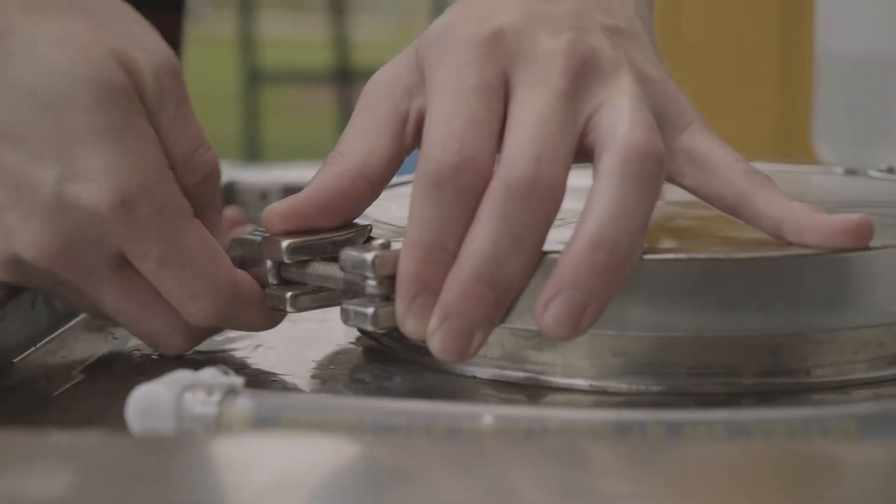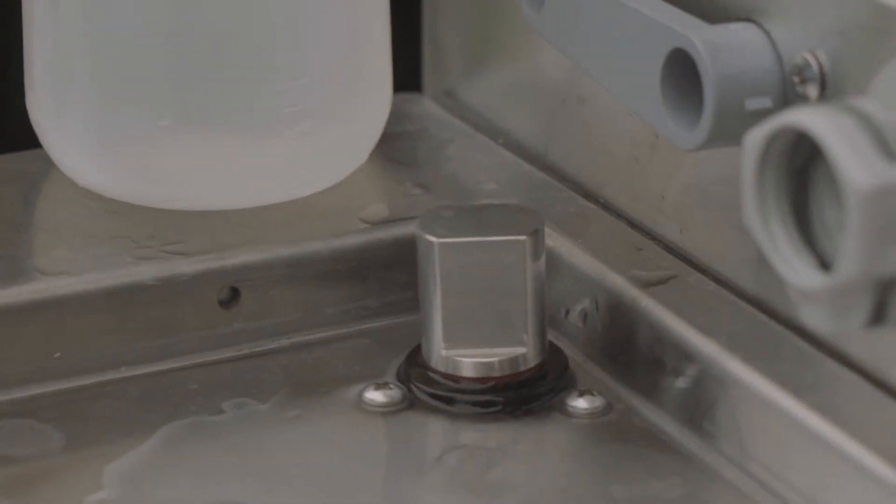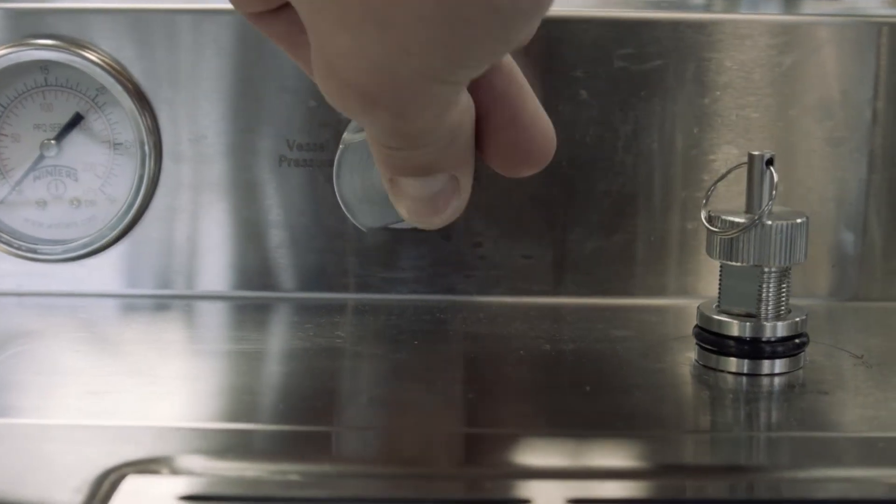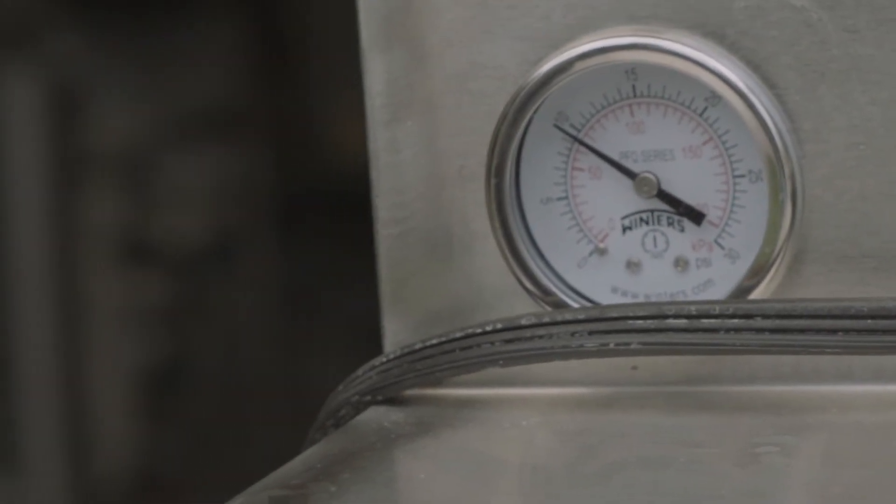Step 8. Repeat the process with a no rinse sanitizer, making sure to cover all surfaces and liquid injection system. Pressurize and push again through all the ports and tap.